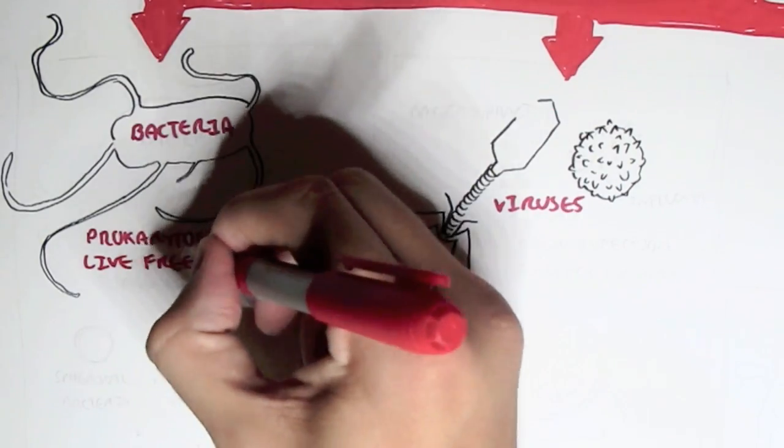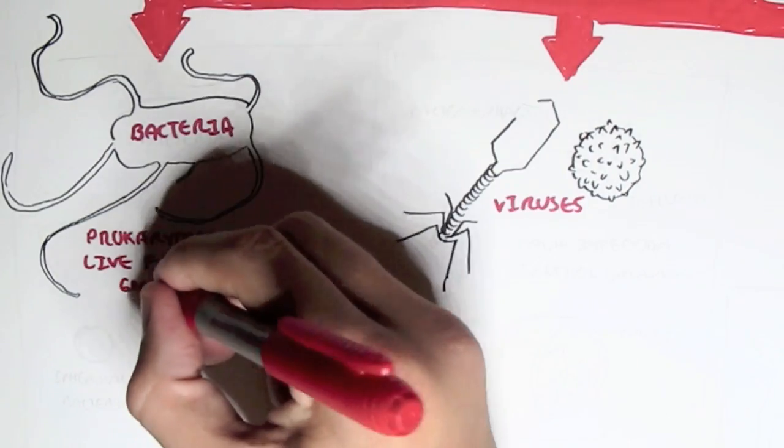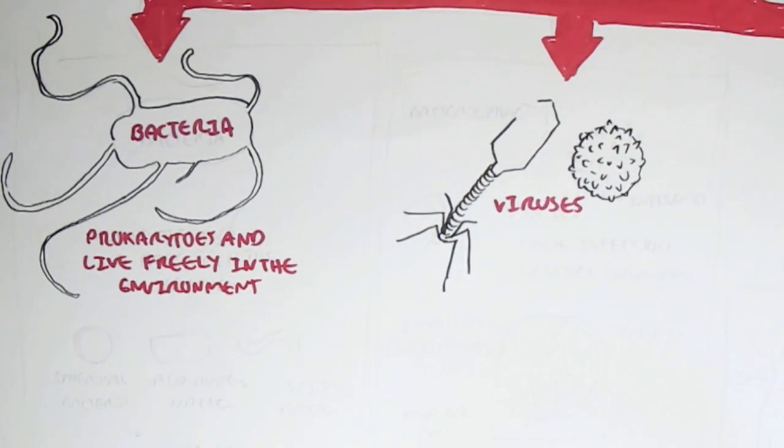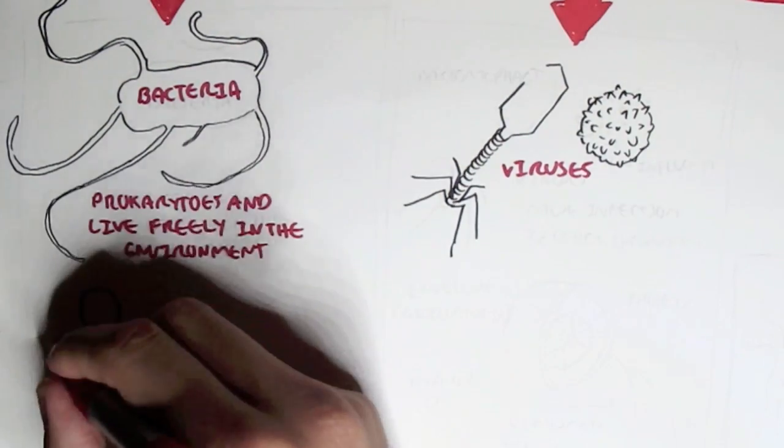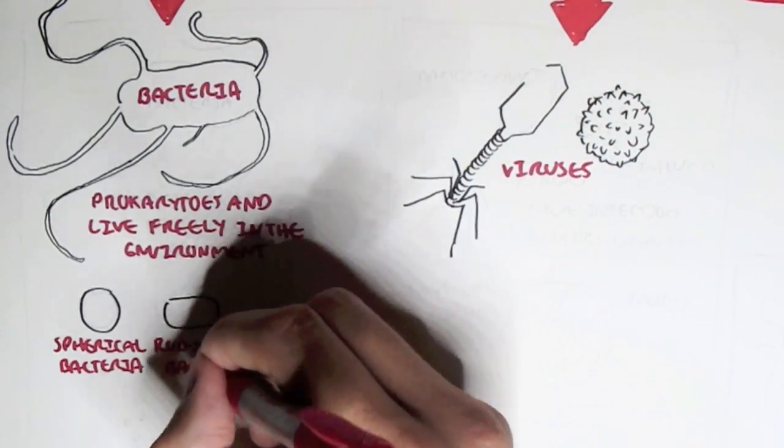And so the bacteria can be classified according to a structure. It has three structures. It can be a spherical bacteria, a rod-shaped bacteria, and also a spiral bacteria.